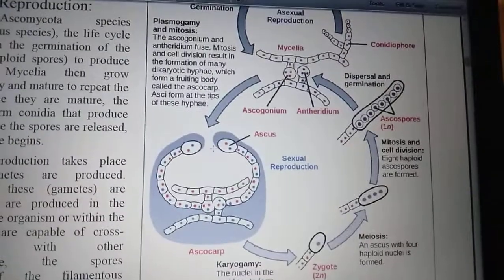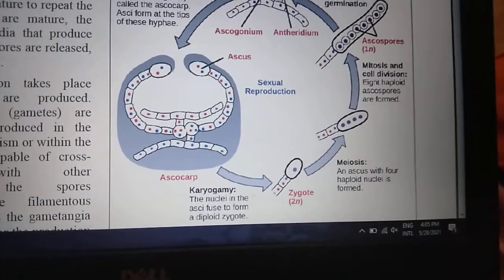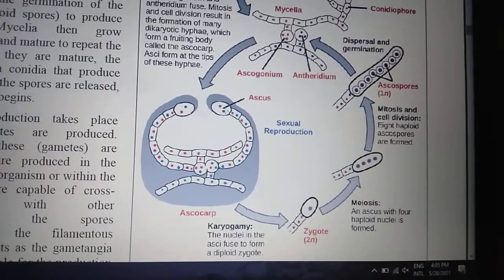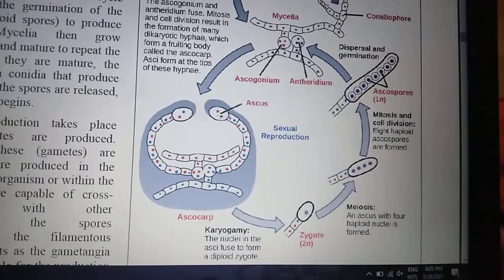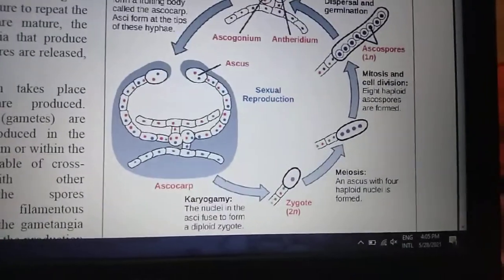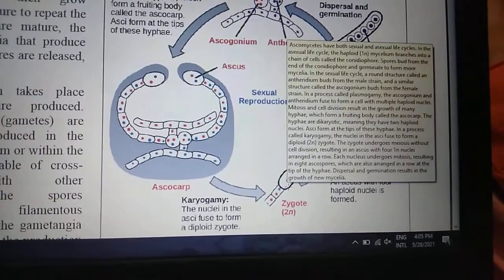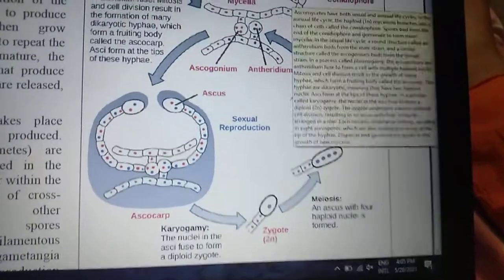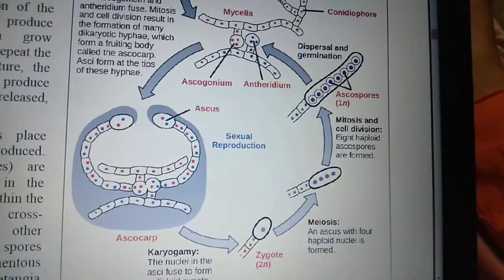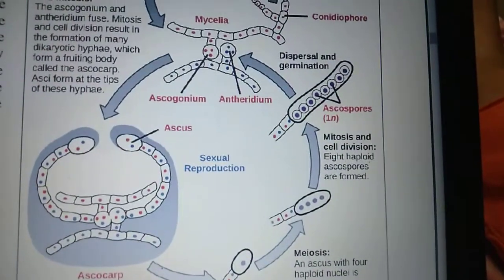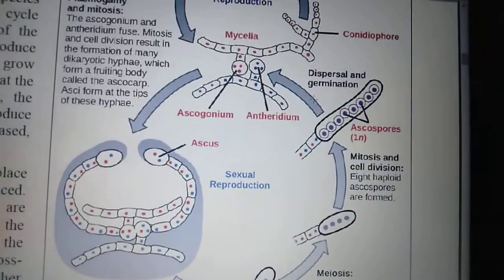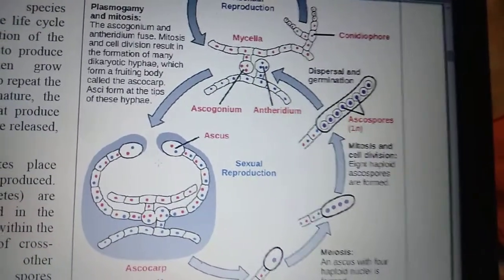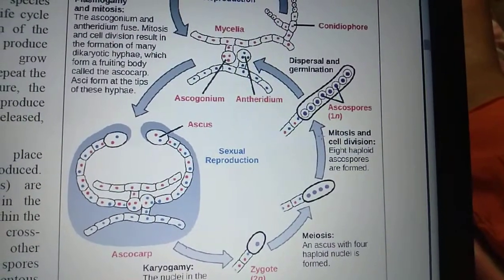Plasmogamy occurs but karyogamy is delayed, shown by the different blue and red colors representing two different strains of nuclei. Where these two nuclei fuse, the zygote becomes diploid. Then meiosis takes place and an ascus with four haploid nuclei is formed. Then mitosis occurs and eight haploid ascospores are formed. The major phases are: the dikaryotic phase, the diploid phase, and then the haploid phase.